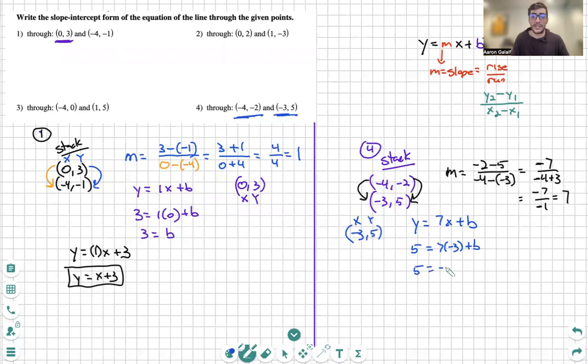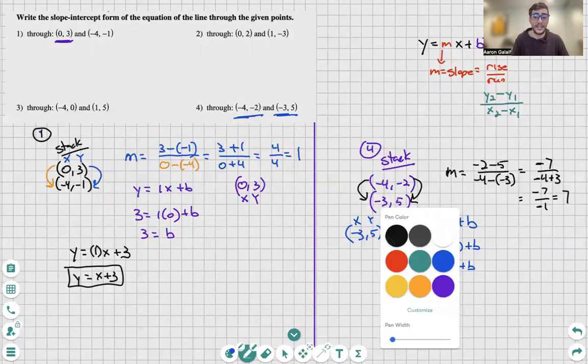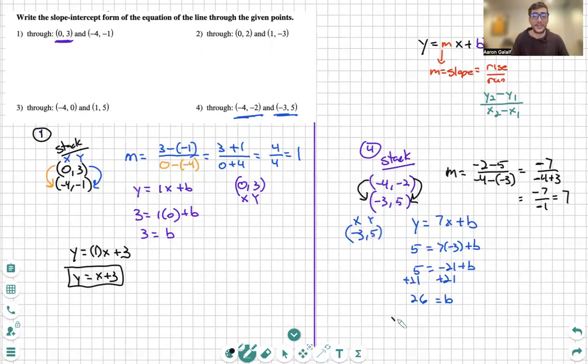Five equals negative 21 plus b. In this situation, remember, we want b on its own. So I will add 21 to both sides. We will see that b is equal to 26. And then finally, I will rewrite my answer. y equals 7x plus 26 with an m of seven in a b y-intercept of 26.